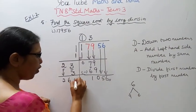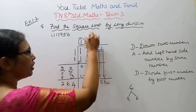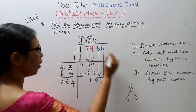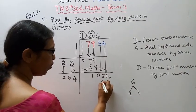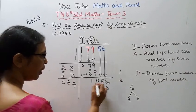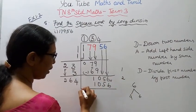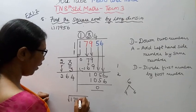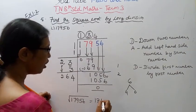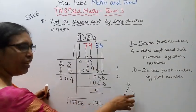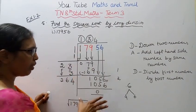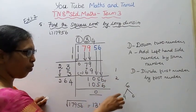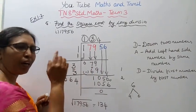So the answer is 1, 3, 4 — that is 134. The square root of 17956 equals 134. Verify: 134 times 134 equals 17956. The answer is 134.